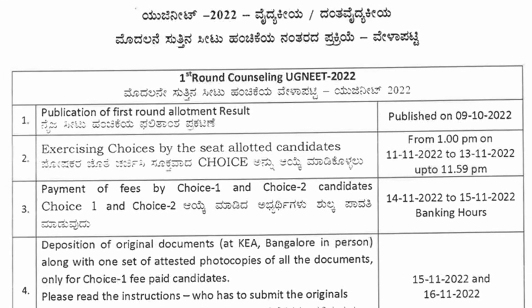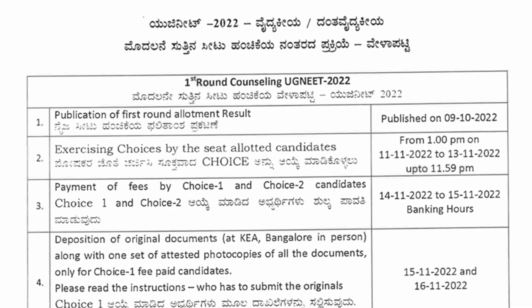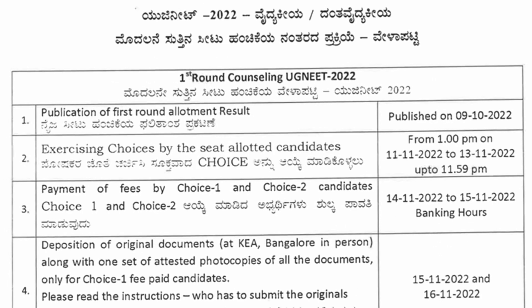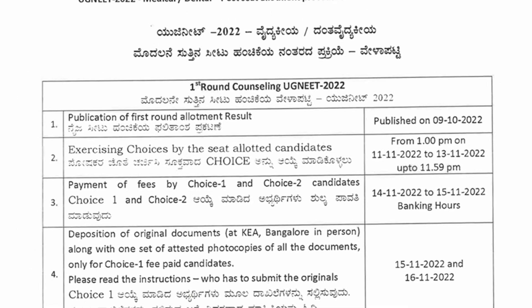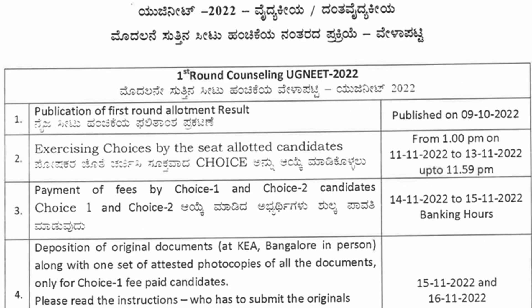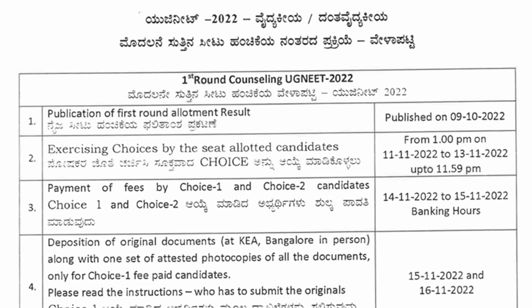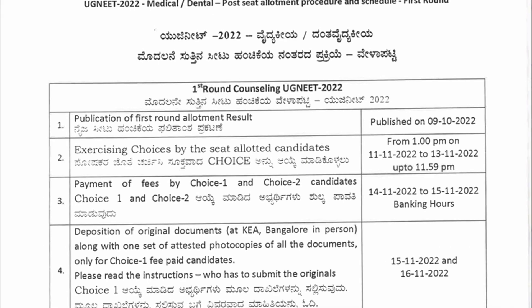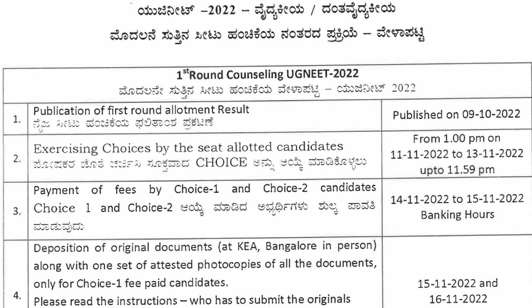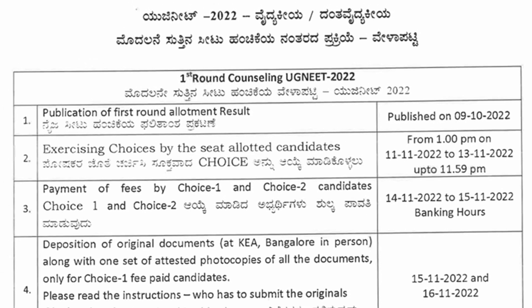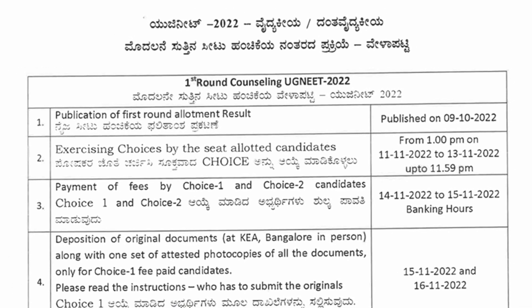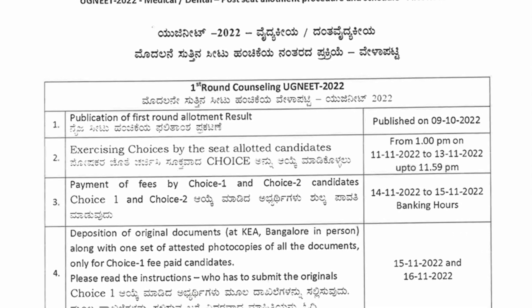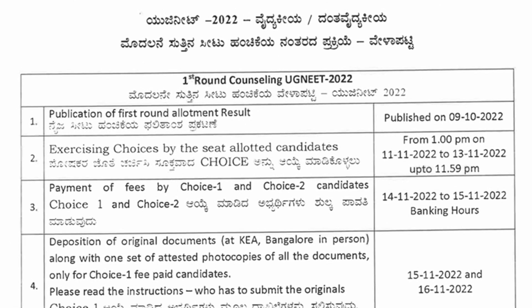The first round allotment result was published on November 9th. After the first round allotment, students have four choices. Choice number one: if you are satisfied with the allotted seat. Choice number two: if you are satisfied with the allotted seat but wish to participate in the next round, that is the second round.